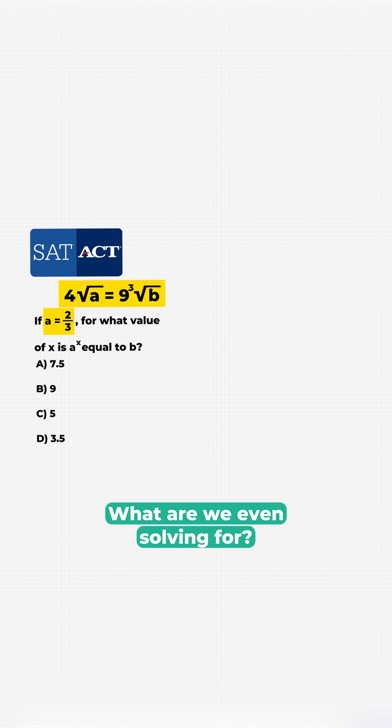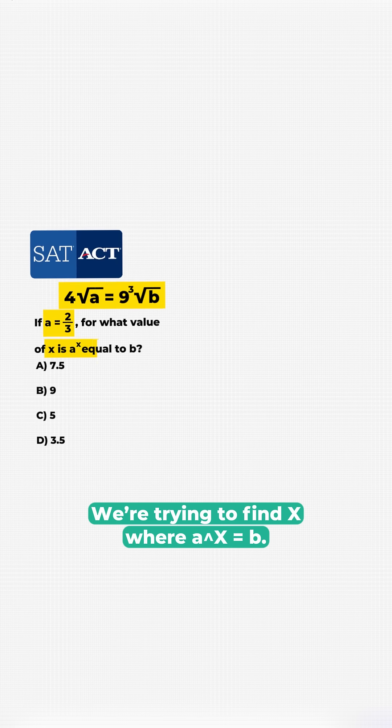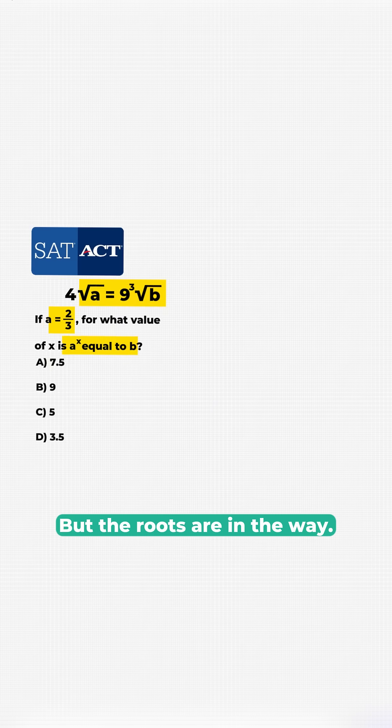A is 2 thirds. Cool, what are we even solving for? We're trying to find X where A to the power of X equals B, but the roots are in the way.